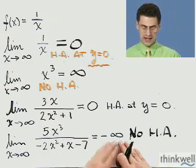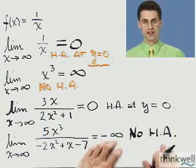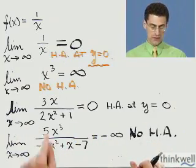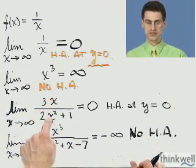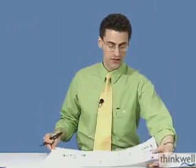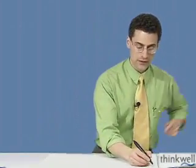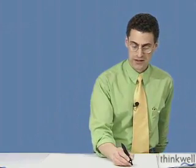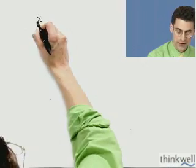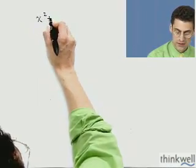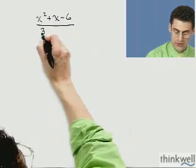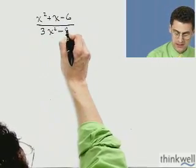So if we get infinity or negative infinity, there's no horizontal asymptote. If we actually get a number, there is a horizontal asymptote. In practice, you look for the highest term in the numerator and the highest term in the denominator, then see what happens after you cancel. Let's do a few more examples to really illustrate what's going on. Let's find the horizontal asymptotes for x squared plus x minus 6, all divided by 3x squared minus 9.